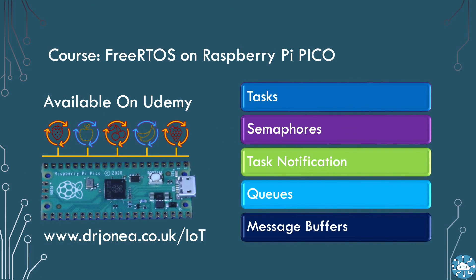For further tutorials on FreeRTOS kernel functionality, please take a look at my Udemy course FreeRTOS on the Raspberry Pi Pico. This looks in more detail at tasks, semaphores, task notification, queues and message buffers, as well as SMP. It provides 15 separate project examples of FreeRTOS kernel, which will all compile and run on the Pico.